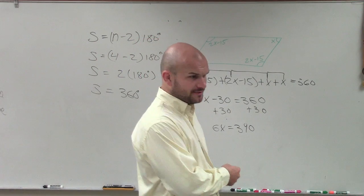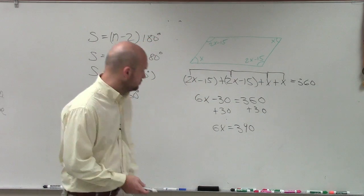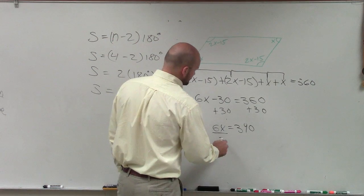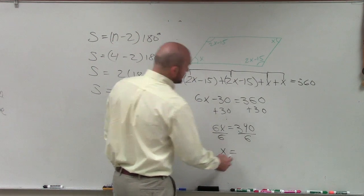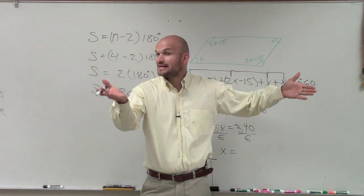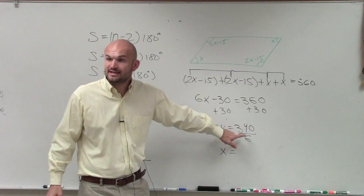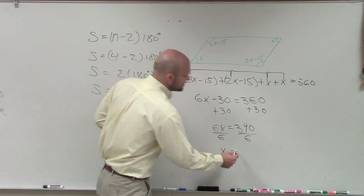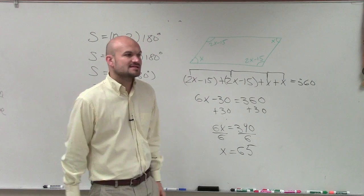And Blake, what would be my last step here? Divide 390 by 6. So therefore, x equals, well, we know 6 divides into 360 sixty times, and then there's 30 more to get to 90, which would be 5 times, so it's 65. Very good.